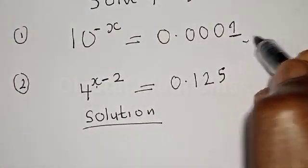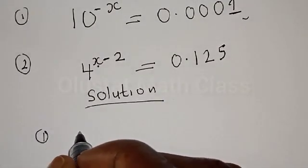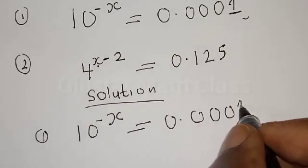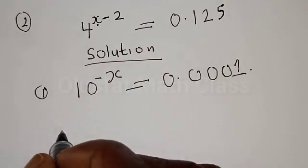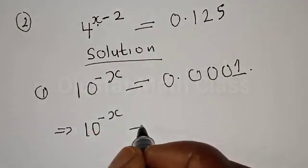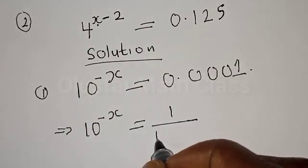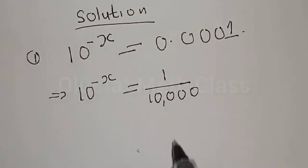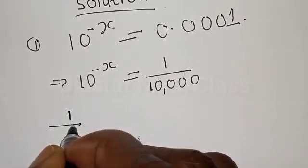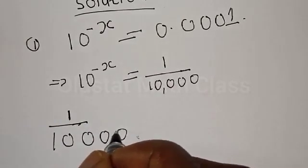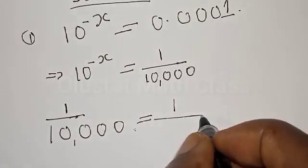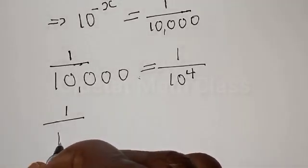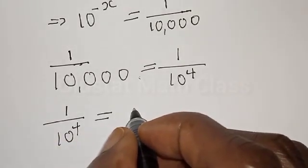Let's start from the first question. We have 10 raised to power minus s is equal to 0.0001. This can be expressed as 10 raised to power minus s is equal to 1 over 10,000. For our right hand side, 1 over 10,000 — the denominator 10,000 is 10 raised to power 4.